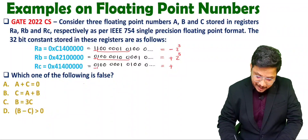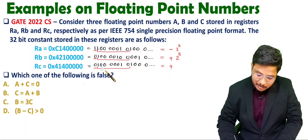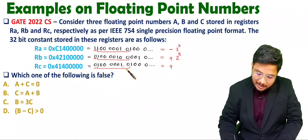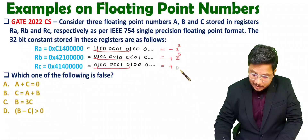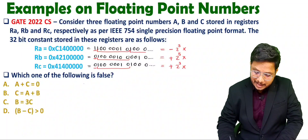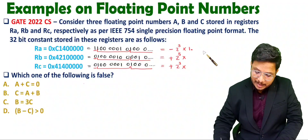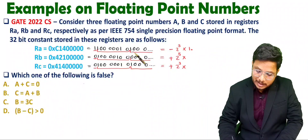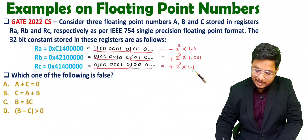For RC's 8 exponent bits, we have 128 plus 2 giving 130, and 130 minus 127 equals 3, so the exponent is 2 to the power 3. The remaining 23 bits represent the mantissa — that is 1 point something. For RA the mantissa bits show 1.1, for RB they show 1.001, and for RC they show 1.1.